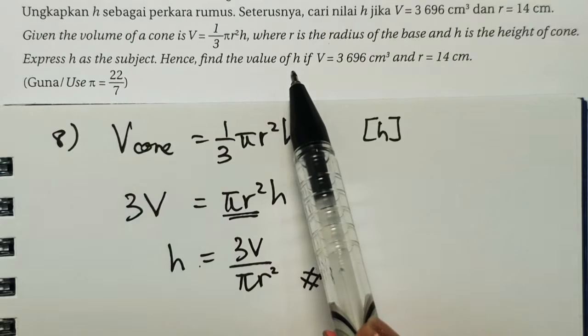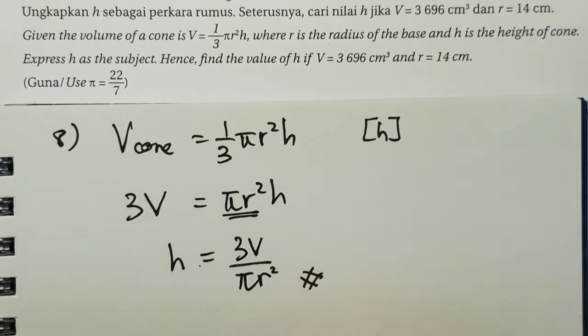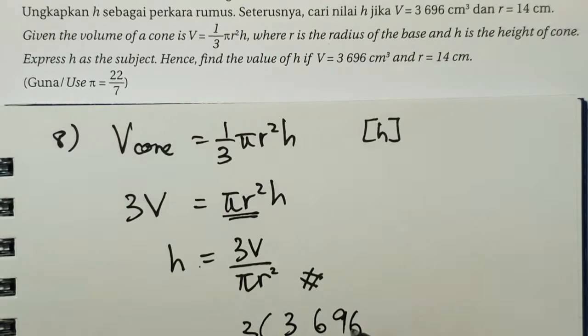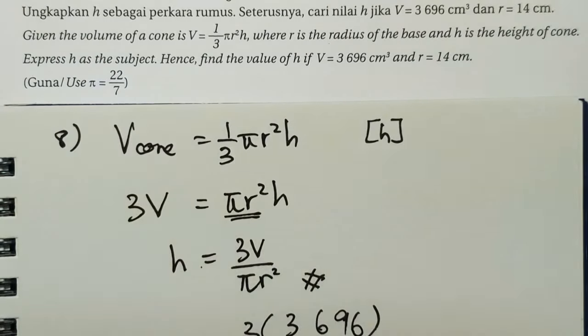Now, find the value of h if V is given and r is given. So what we need to do is we substitute what we have. 3,696 over the pi is 22 over 7. The r squared is 14, so times 14 times 14.